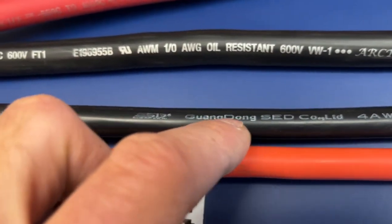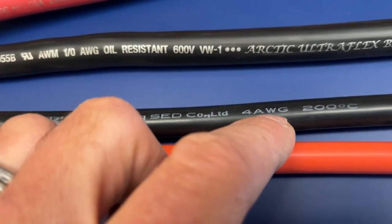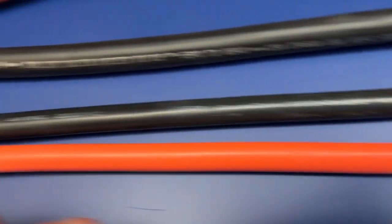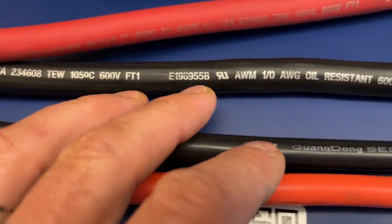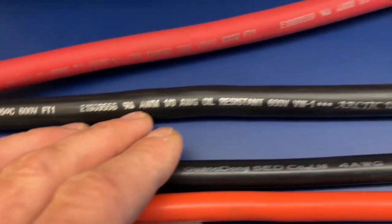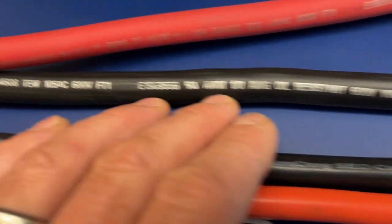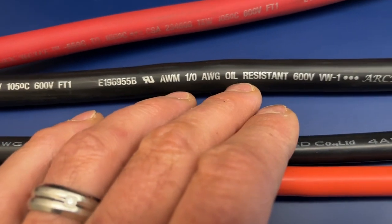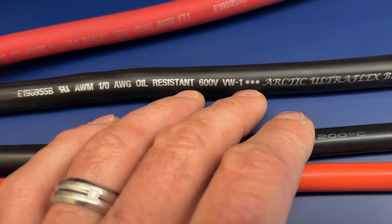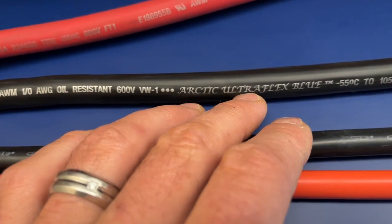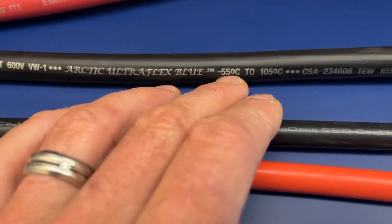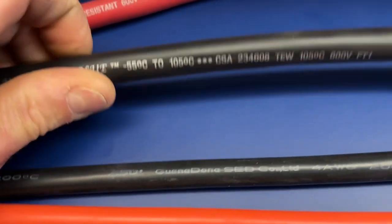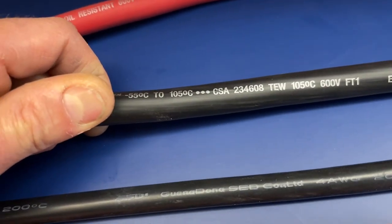Four gauge, 200 degrees Celsius and all that as you're probably reading. This is now Polar Wire, one ought, and Welding 600 volt, bunch of specifications. Arctic Ultra Flex Blue, minus 55 Celsius to 105, CSA Canadian Standard approved.